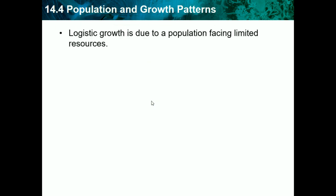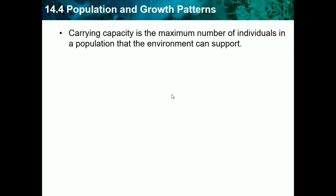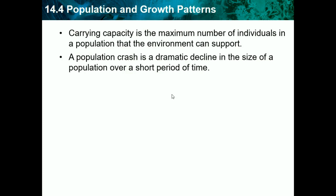Logistic growth occurs when a population faces limited resources. The population keeps growing until it reaches its carrying capacity — the maximum number of individuals the environment can support, represented as a line on the growth curve. The environment cannot support anything more than the carrying capacity. A population crash is a dramatic decline in population size over a short period, occurring after a population exceeds the carrying capacity.